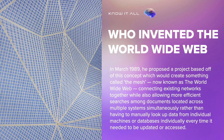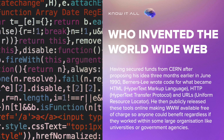In March 1989, he proposed a project based on this concept which would create something called the mesh — now known as the World Wide Web — connecting existing networks together while also allowing more efficient searches among documents located across multiple systems simultaneously. Having secured funds from CERN after proposing his idea in June 1990, Berners-Lee wrote code for what became HTML (Hypertext Markup Language), HTTP (Hypertext Transfer Protocol), and URLs (Uniform Resource Locator). He then publicly released these tools online, making the WWW available free of charge so anyone could benefit, regardless of whether they worked within large organizations like universities or government agencies.